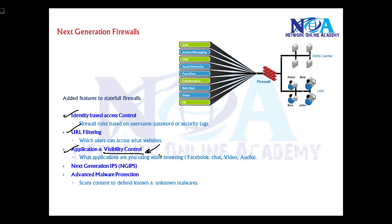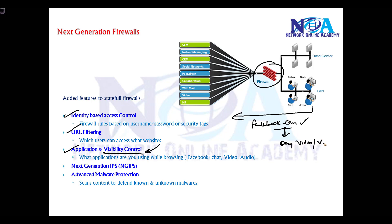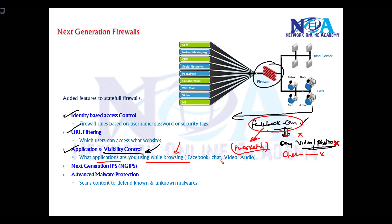Application visibility control is another common feature in most next generation firewalls. For example, you may want users to access facebook.com, but at the same time deny certain micro-applications inside Facebook — like video or audio chat, or specific chat features — while still allowing Facebook overall, perhaps for marketing purposes. We can define what applications are being used while browsing and filter rules based on these micro-applications.